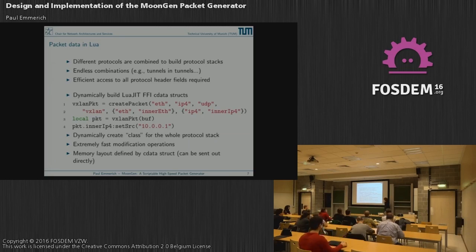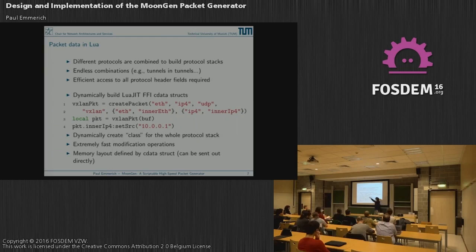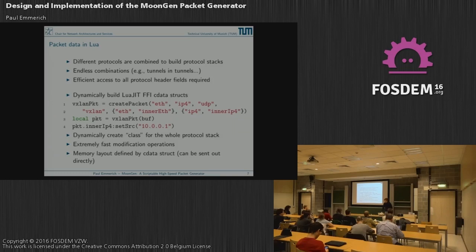This is extremely fast, thanks to the LuaJIT FFI. I have benchmarks where it's even faster than C-based package generators. The main reason is that C package generators need a huge switch statement in their main loop checking what's configured. With the LuaJIT approach, you write a really small main loop that does just the actions you actually need. The memory layout is defined by the CData struct, so we can just send out the packet immediately after creating it — no additional copy step necessary.